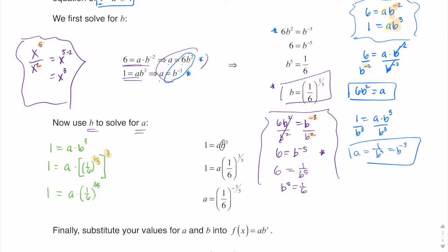So I have one equaling a times one sixth to the three fifths. If I want to solve for a, I know this is ugly — I'm not denying that — but it is just a number. We can calculate that number on our calculator. Since it is just a constant being multiplied to a, I'm going to divide both sides by one sixth to the three fifths. That will cancel, and ultimately I get a equaling one over one sixth to the three fifths, which I write with a negative exponent. So I've now solved for both a and b.